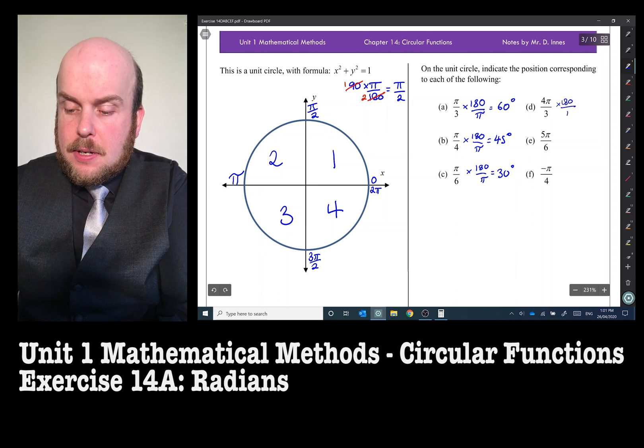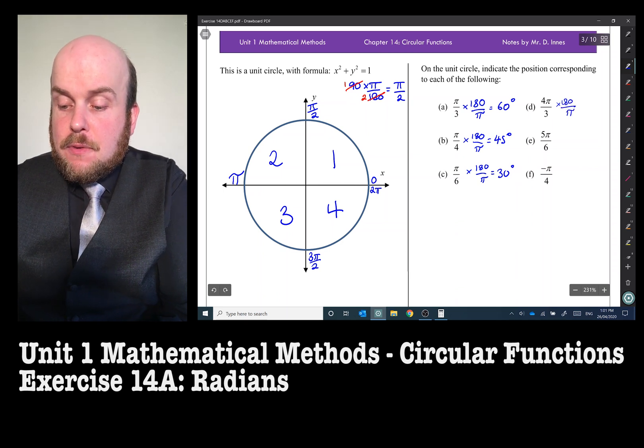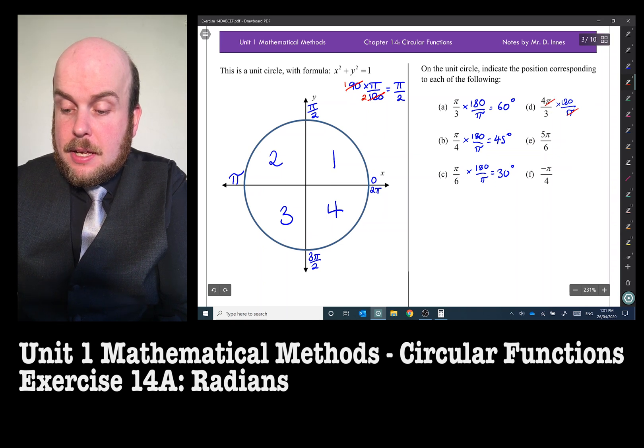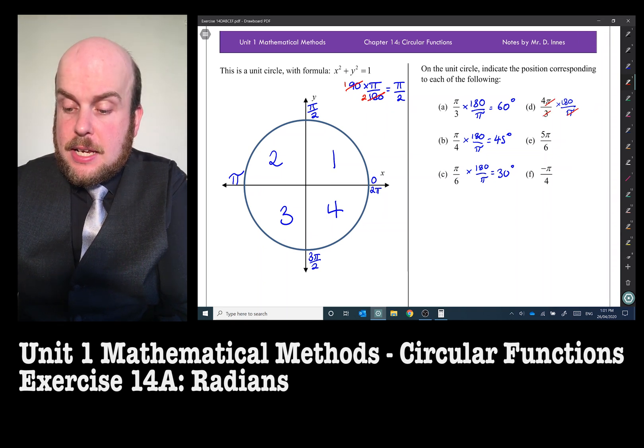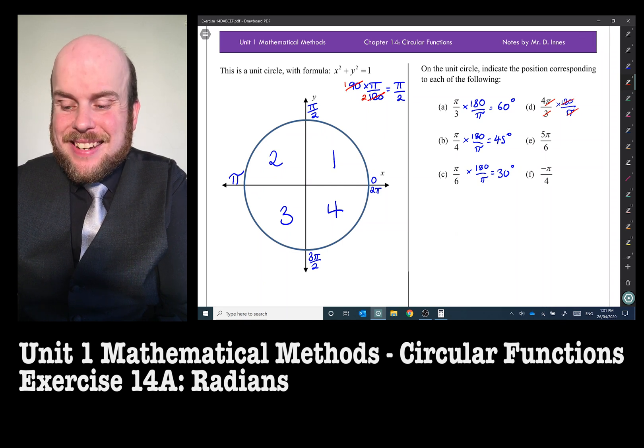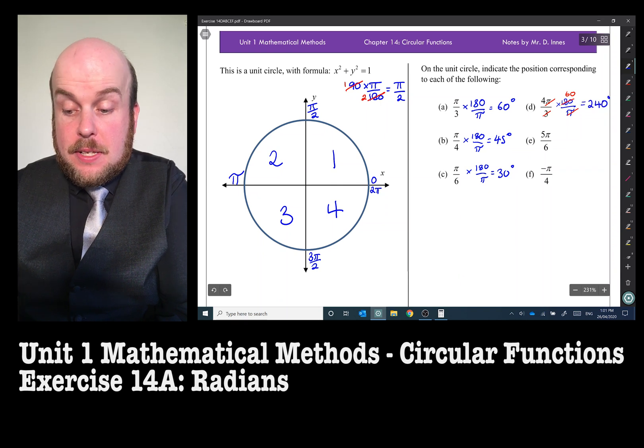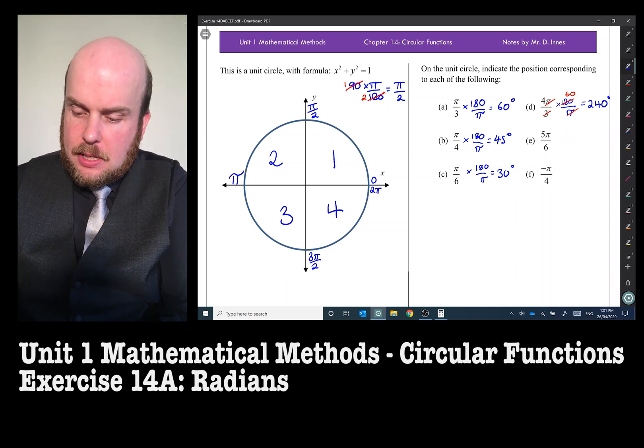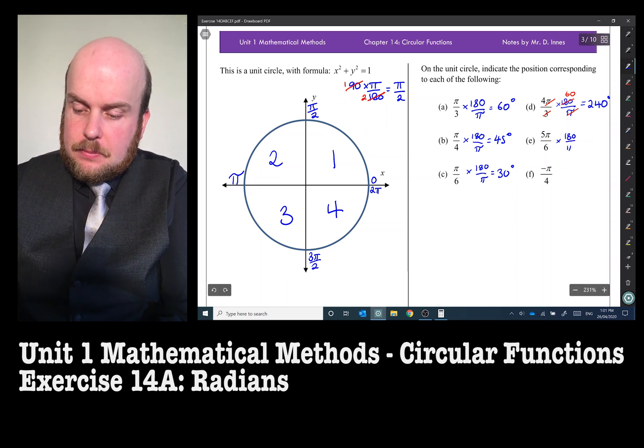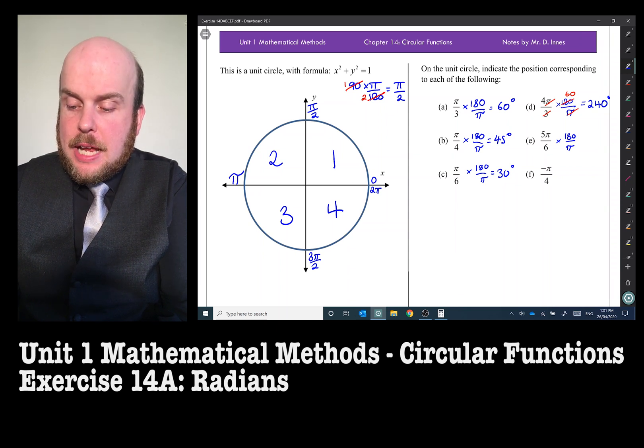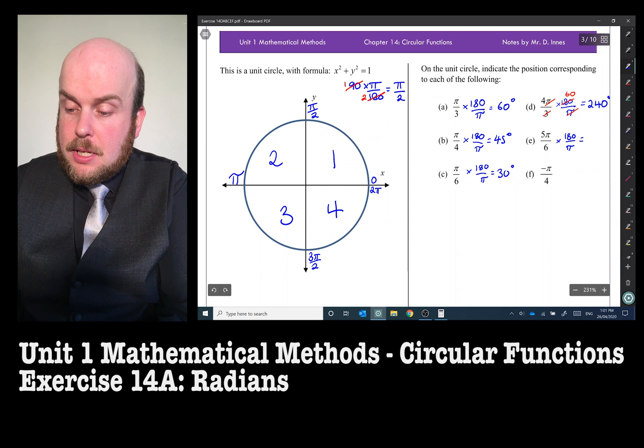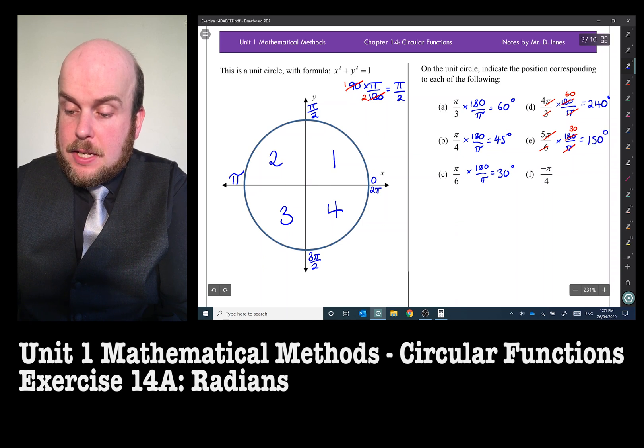4π on 3, so if we cancel out the π's here, we'll cancel out this 3 and this 180, so 3 goes into 180 sixty times, so that's going to be equal to 240 degrees, because 4 times 60 is 240. 5π on 6 times by 180 over π, so we can cancel those π's, cancel that 6 and 180, and that will go in 30 times, so this will be 150 degrees.